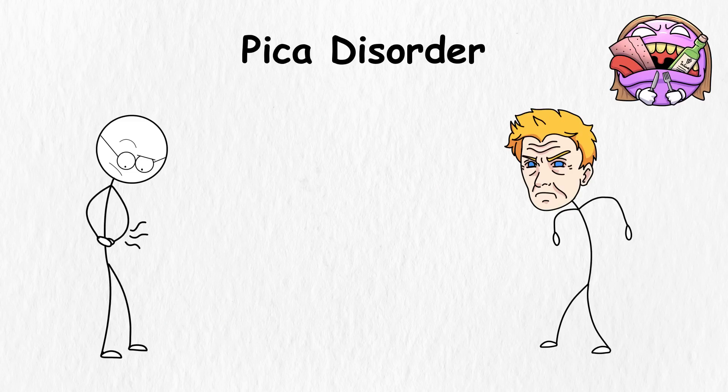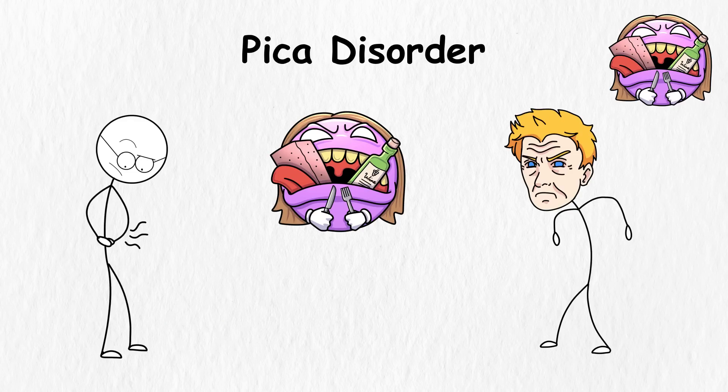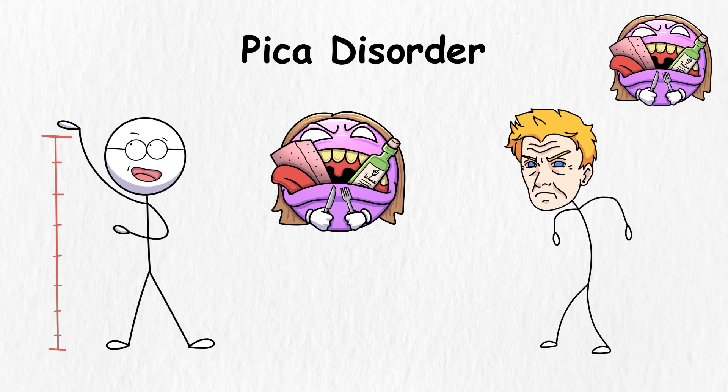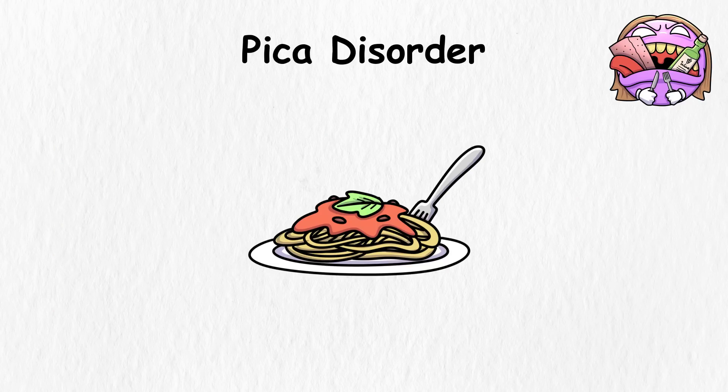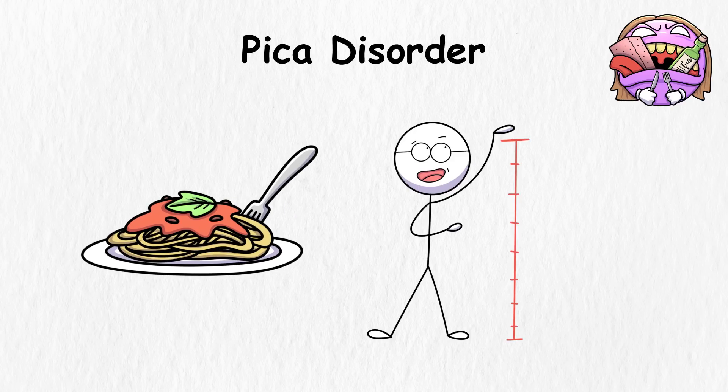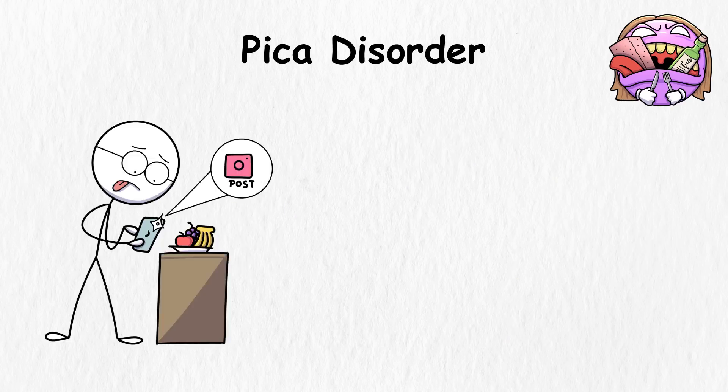We all have weird cravings at times, but pica disorder takes it to a more intense level. When you suffer from this disorder, your taste buds rebel against you. So instead of looking for spaghetti, you'd be craving for another thing that's long but less tasty, like hair. The thing is that this isn't some kind of food trend, but a real compulsion.